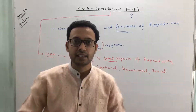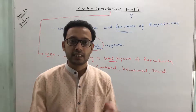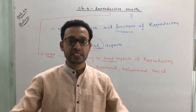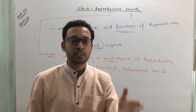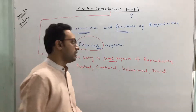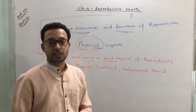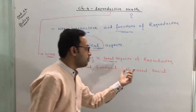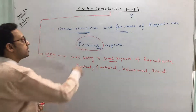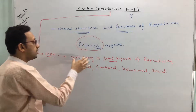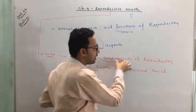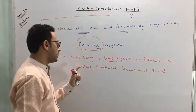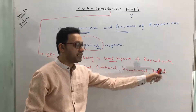A person who looks physically healthy doesn't necessarily mean the person is healthy. Health means well-being in all aspects. So according to WHO, reproductive health is total well-being in all aspects of reproduction — physical, emotional, behavioral, and social.